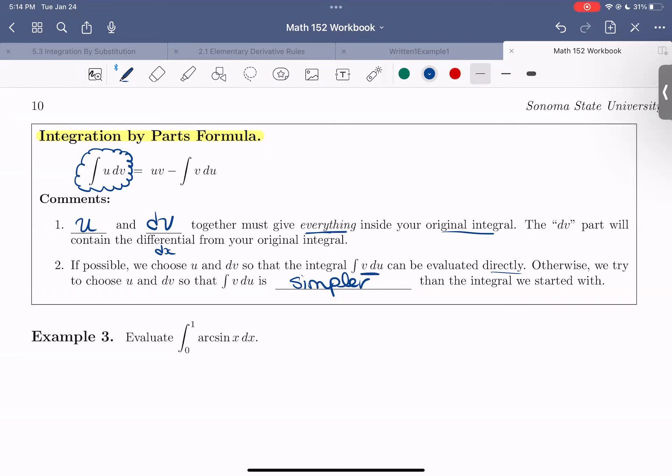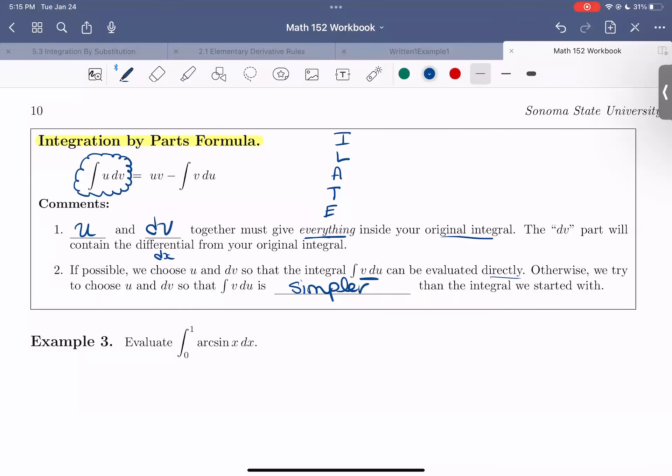For integration by parts, there's also a little rule that is often used. It's called E-LATE. I'll just write that out. I-L-A-T-E. E-LATE? I don't know. I'll spell it out for us. This is an acronym, which means the following. E-LATE. And this is for choosing u, for choosing u in your u dv integral.